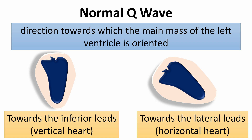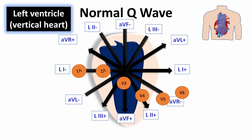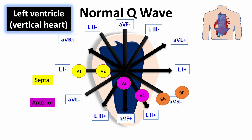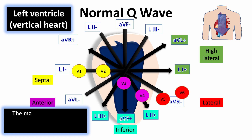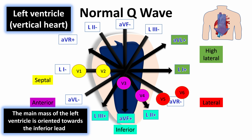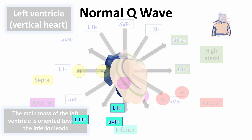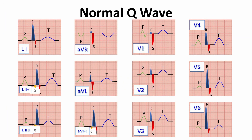To understand the difference between vertical and horizontal heart: as we know from the second ECG lecture, the geographical representation of the left ventricle shows that V1 and V2 leads are located in the septal region, V3 and V4 in the anterior region, V5 and V6 in the lateral region, AVL and lead 1 in the lateral region, and AVF, lead 2, and lead 3 at the inferior region. So in the vertical heart, the main mass of the left ventricle is oriented towards the inferior leads, and physiological Q waves appear in leads 2, 3, and AVF.